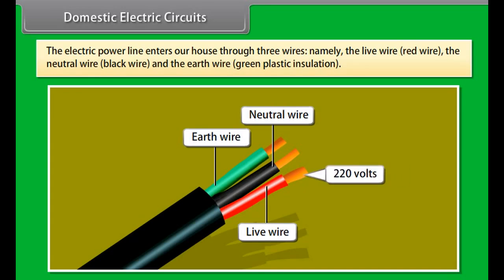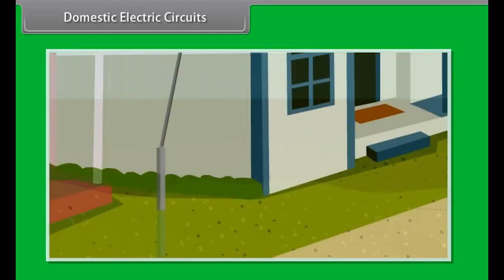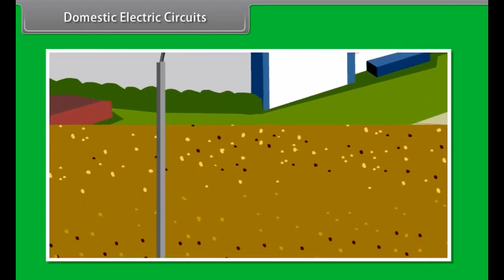Domestic Electric Circuits. Electric Power is generated far away from the places it is consumed. At the generating station the electric power is generated at 11,000 volts with an alternating voltage frequency of 50 hertz. The power is transmitted to the places of consumption at high voltage to reduce the loss of energy during transmission.